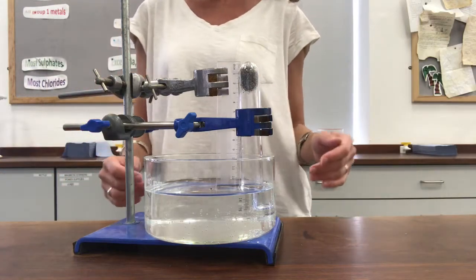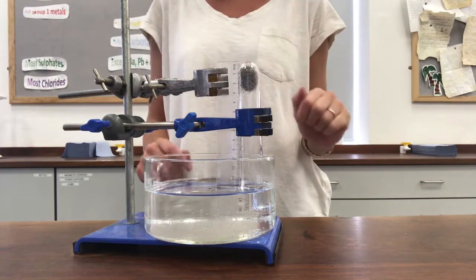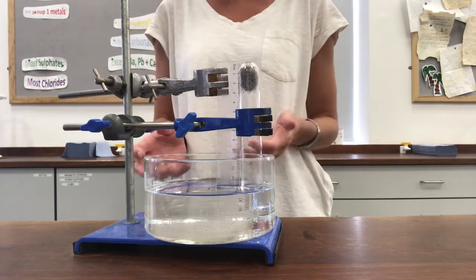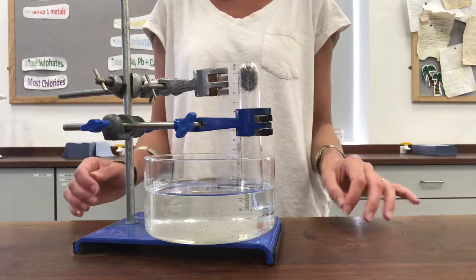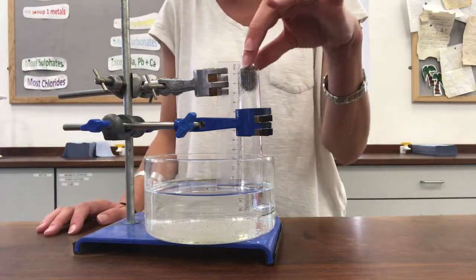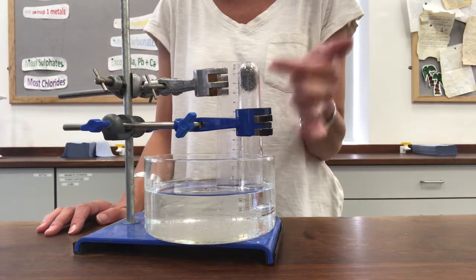This experiment uses iron rusting to prove that the percentage of oxygen in air is about 20%. What I've set up here is a boiling tube with some damp wire wool, iron wool, trapped up in the top here.